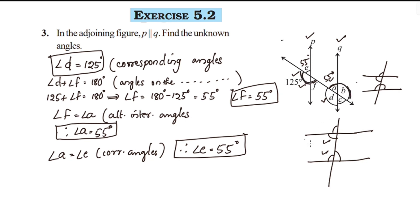Angle B is also found using alternate exterior angles. Alternate exterior angles are equal when lines are parallel. 125 degrees — angle B is the alternate exterior angle. Therefore, angle B is equal to 125 degrees.